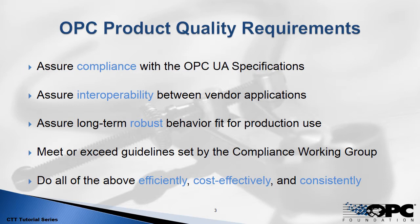What does it mean to have product quality? We need to assure that products comply with the OPC UA specifications. We need to assure that products are interoperable so that different vendors' products can work with other vendors' products. We also need to make sure that any product will behave consistently, robustly and reliably.